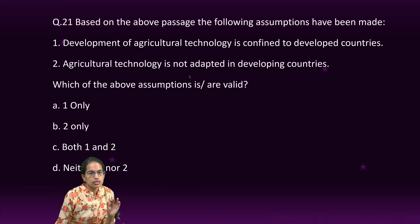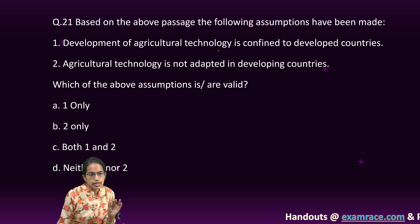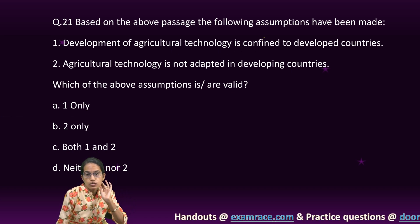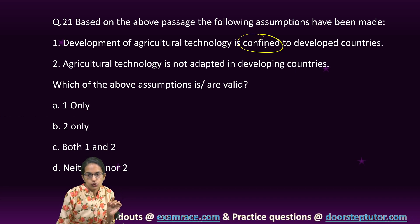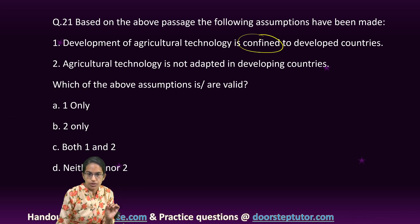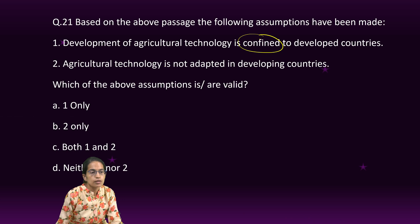Based on this, which of the following assumptions can be made? I cannot say that development of agricultural technology is only confined to developed nations. It says developed nations have developed technologies, but it does not say that it is only confined. So, this is not the correct statement. Agricultural technology is not adopted in the developing nations. That's again incorrect. So, both of them are not a valid assumption based on the passage.